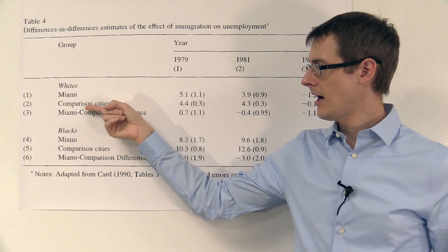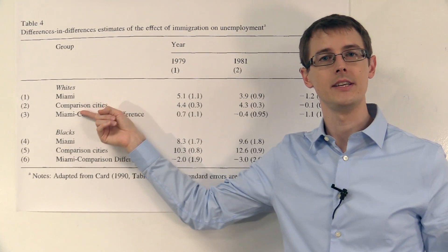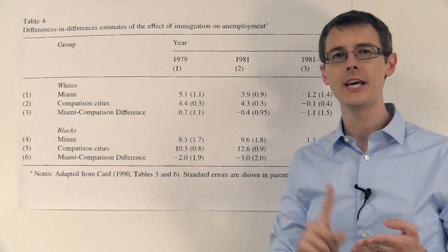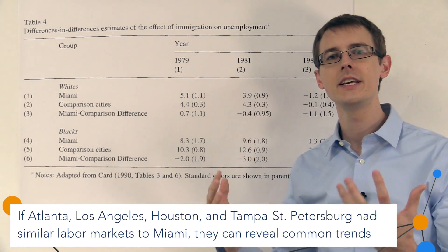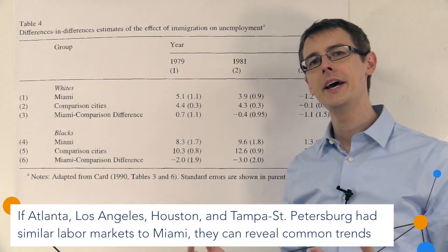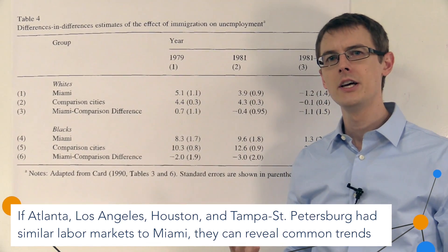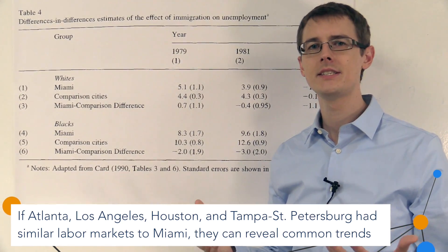So where do we get the common trend from? Well, David Card is going to take four different comparison cities: Atlanta, LA, Tampa, St. Petersburg, and Houston. He's going to argue that these cities have very similar labor markets to Miami, and so they make a good comparison.